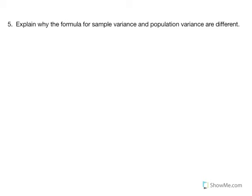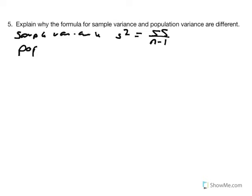As indicated previously, sample variance is calculated by taking SS divided by N minus 1, which is different than population variance, derived by taking SS over capital N. In Problem 5, we are asked to explain why the formulas for sample variance and population variance are different.